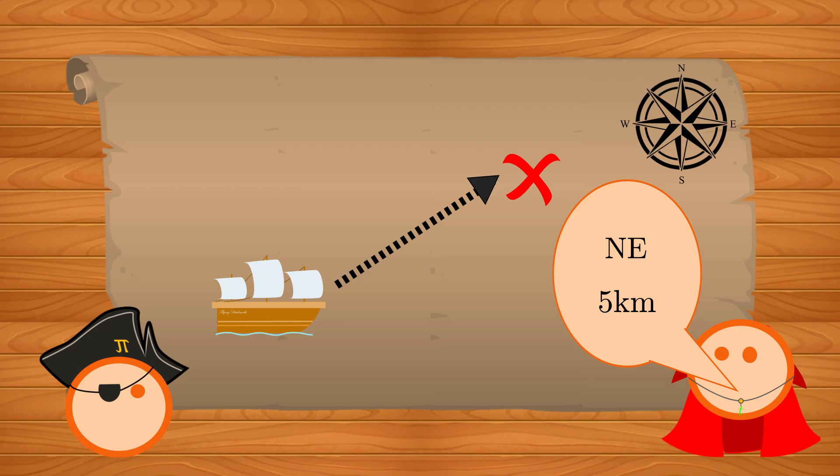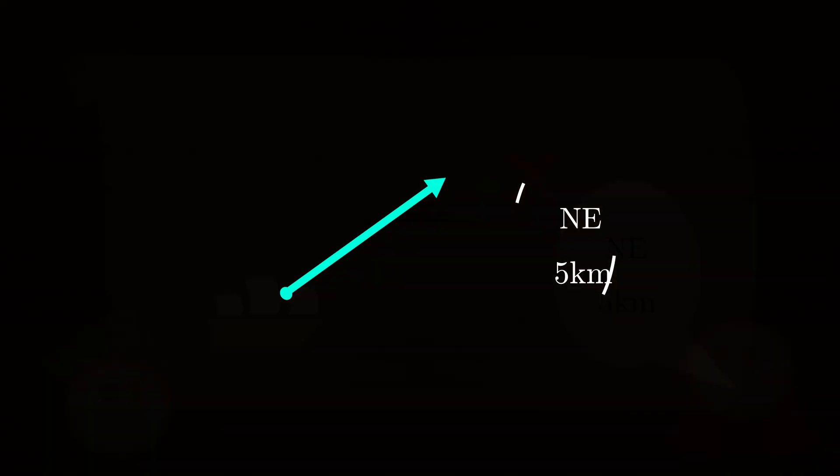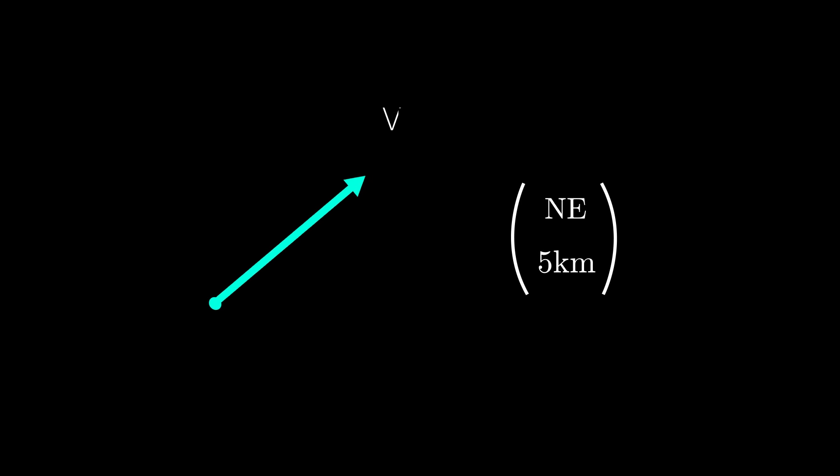But if you had just told the captain to travel 5km, then the ship could have ended up in any direction and not at the treasure. If you just tell the captain north-east, the ship could end up crashing into the treasure at full speed. So you need to convey more than one thing to describe something. And this is a vector.